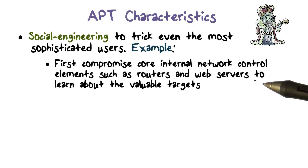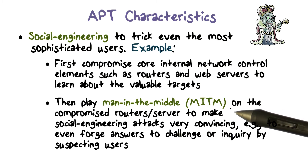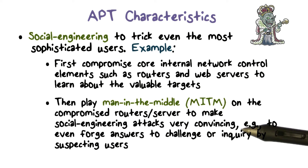This is so-called spear phishing, because it is targeted to a specific individual. And if the internal network router or server has been compromised, the APT can play man-in-the-middle to make such social engineering attacks very successful and very convincing.